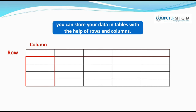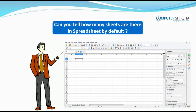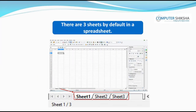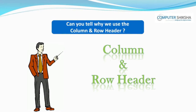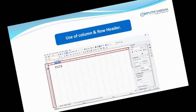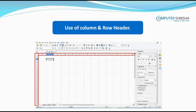Each table that you can view with a spreadsheet is made of many rows and columns. Can you tell how many sheets are there in a spreadsheet by default? There are three sheets by default. Can you tell why we use the column and row header? With the help of the column and row header, you can see where the cell you are working on is located, meaning which column and which row.